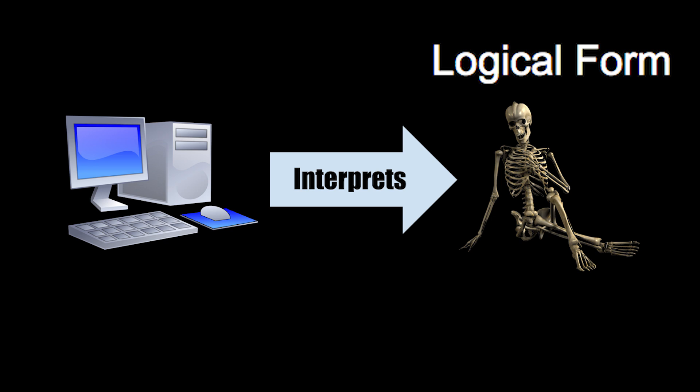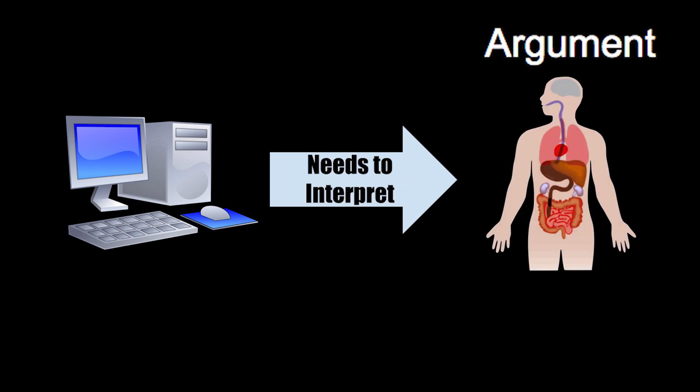This is how automated essay scoring achieves a 93% match rate with human graders. It is possible for students to, like Babel Generator, game automated essay scoring because the computer graders fundamentally can't comprehend the argument. For automated essay scoring to be as accurate as human graders, companies must improve the text comprehension component of computer graders.